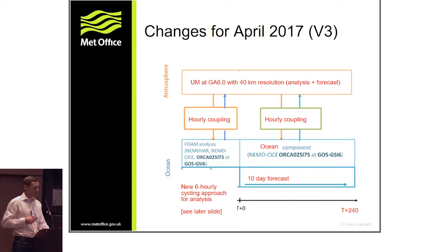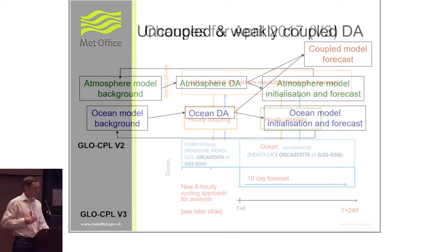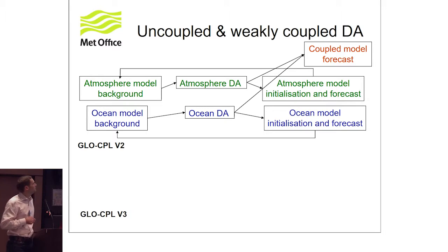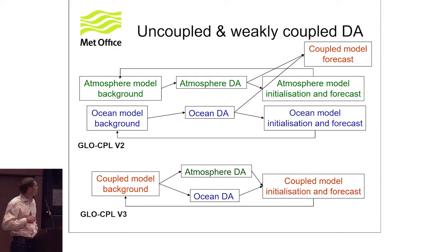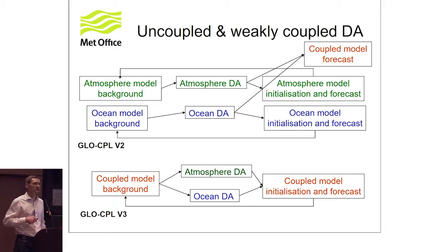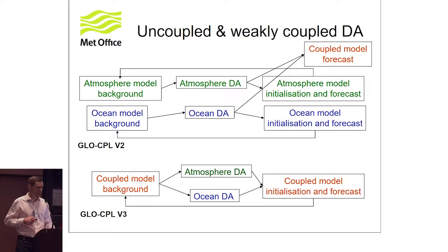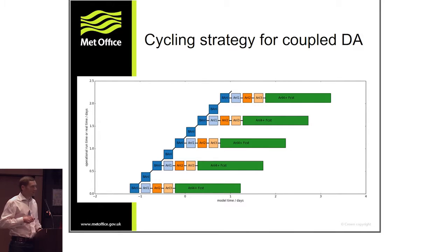A consequence of this coupled initialization is that we move to a six-hourly cycling approach to fit with how the atmospheric model does its data assimilation. What we're using is what people tend to call a 'weakly coupled data assimilation.' In the V2 system, there was a separate atmospheric NWP analysis and a separate ocean FOAM analysis, which were combined to initialize a coupled GloSea5 forecast. In the V3 system, model innovations are calculated within the context of a coupled model.